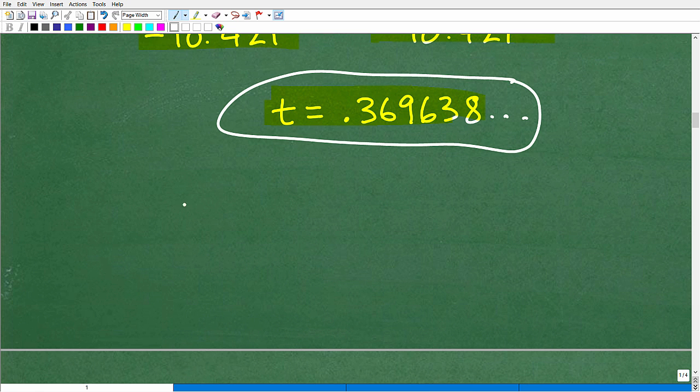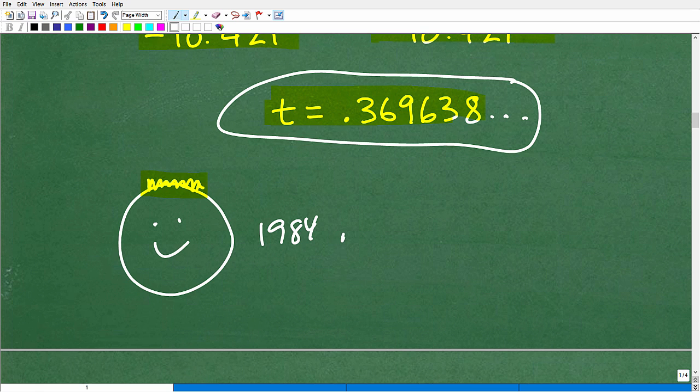Now, of course, you can round off to whatever decimal point the problem might require, but this is it, okay? Now, if you got this right, I must, in turn, give you a 1984 flat top. Now, typically, if you watched any of my other videos, I like to give mohawks, but in this particular video, I'm going to give you a nice 1984 flat top with an A+.